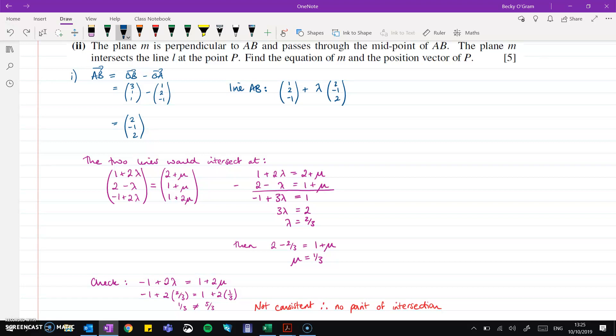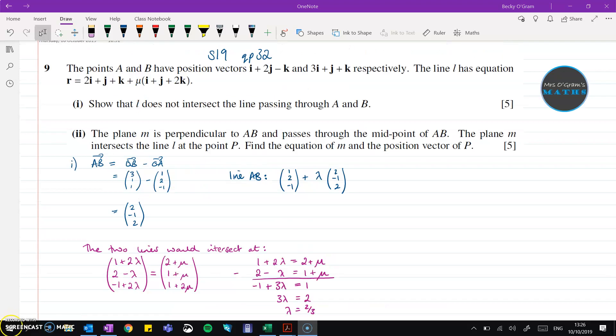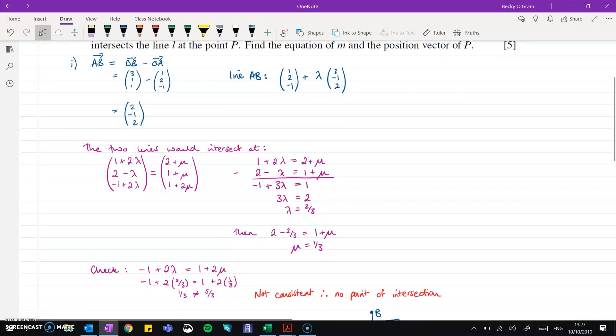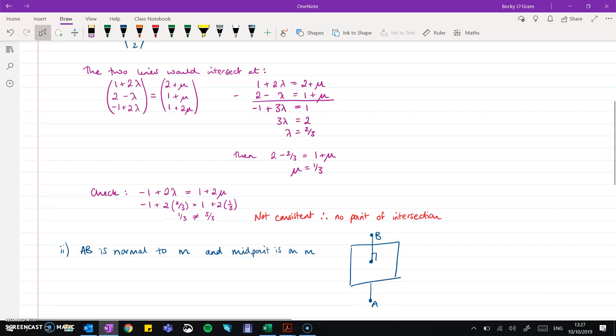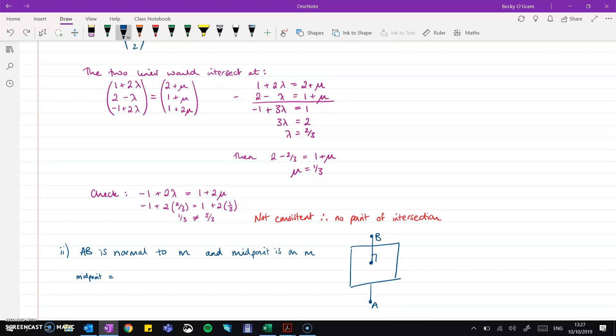Part two. We're told that there's another plane, or that's perpendicular to AB, so it crosses AB at 90 degrees, and it passes through the midpoint of AB. It then intersects the line l that we were given up here at another point which we've called P. We need to find the equation of m and the position vector of P. So if we go down here I've just put some of that information down at the bottom. We've got AB is normal to m and the midpoint is on m. So if this plane right here is m, then AB goes straight through the middle and we have the midpoint sits on that point of intersection. So first we need to find that midpoint.